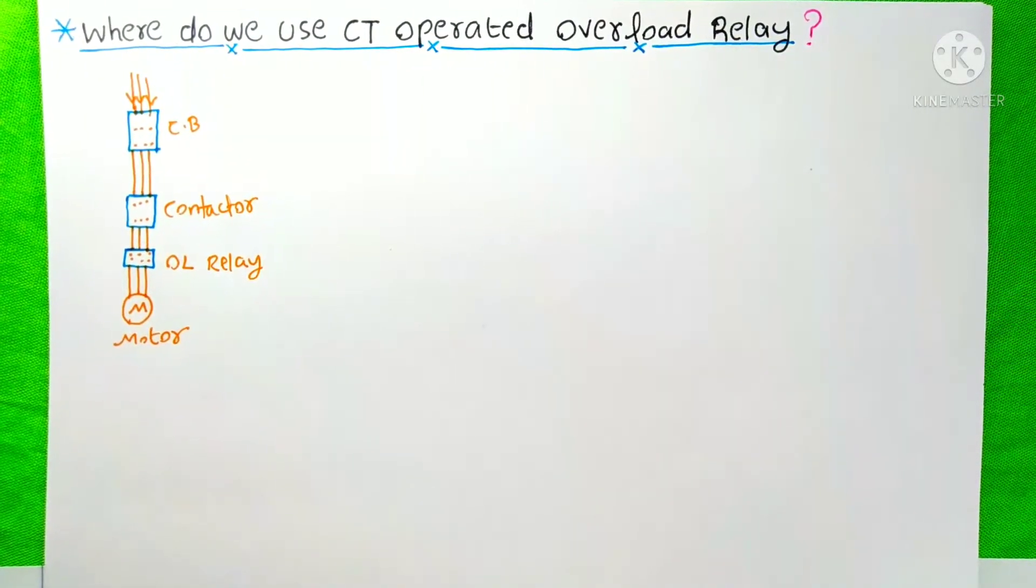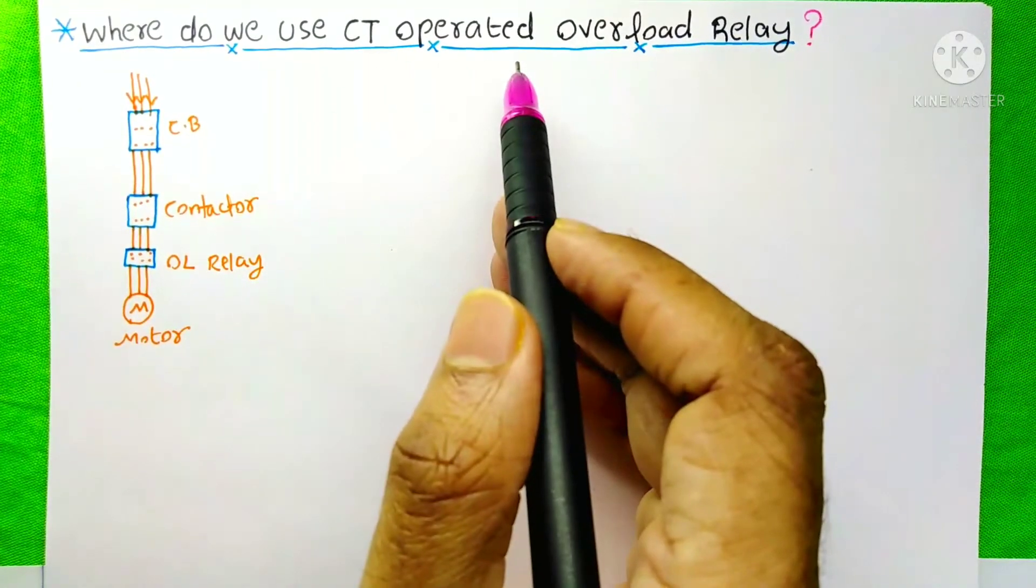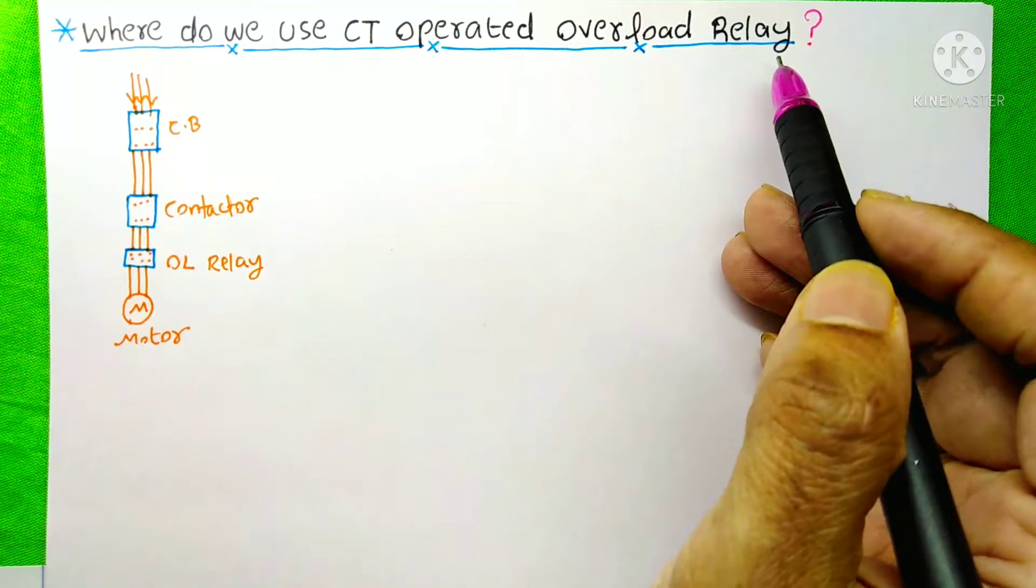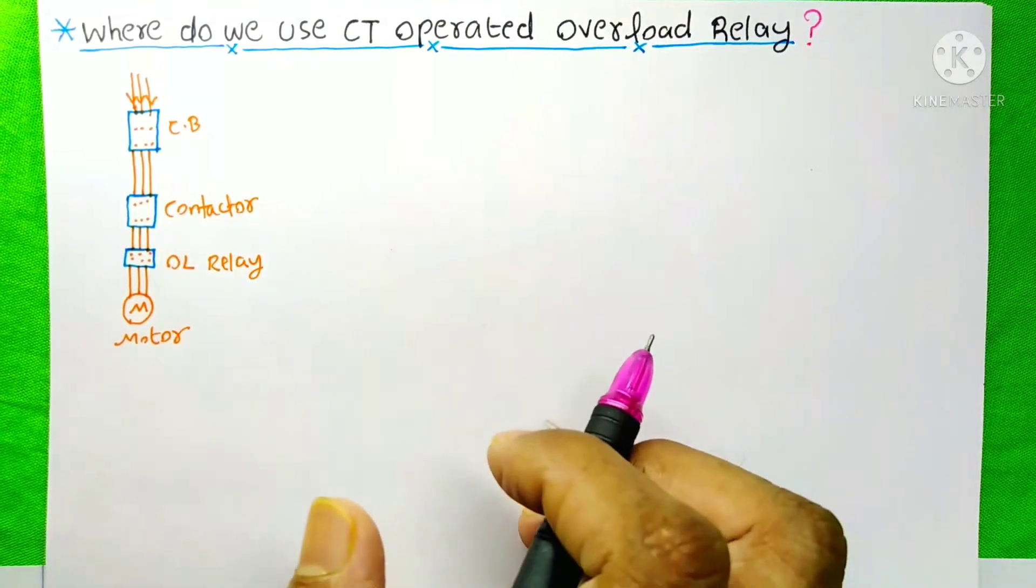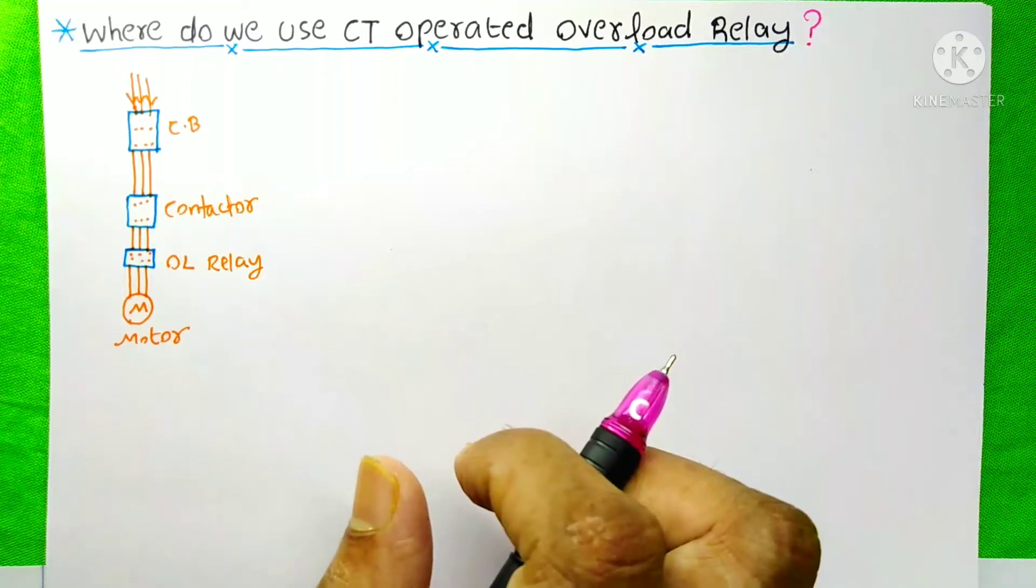Today I am going to discuss with you about where do we use CT operated, means current transformer operated, overload relay. I am an electrical engineer. To learn about this, please don't skip this video till its end.